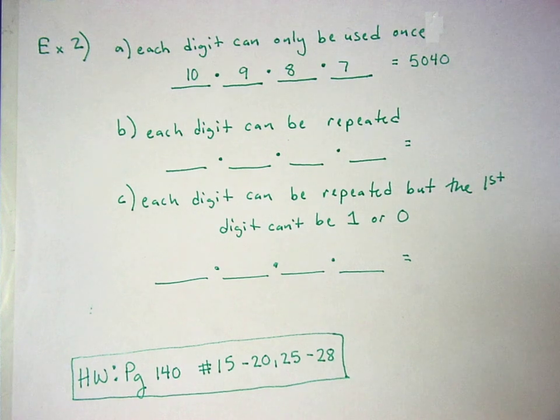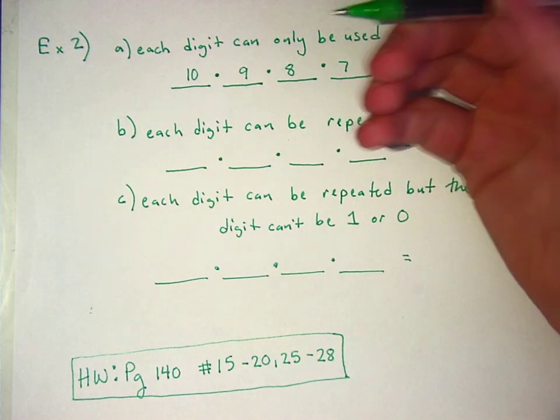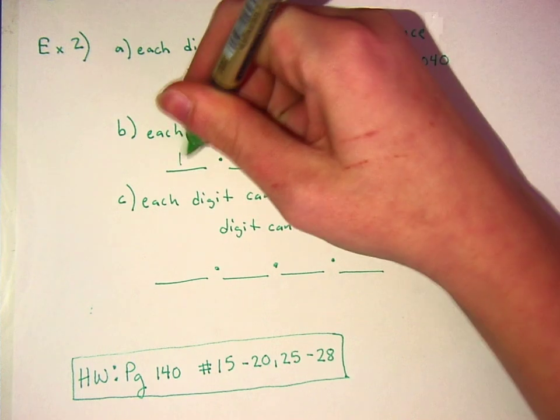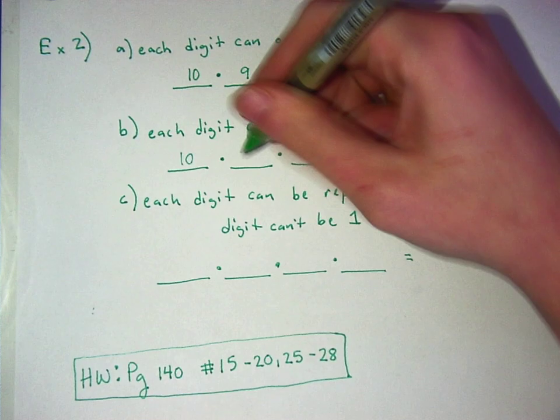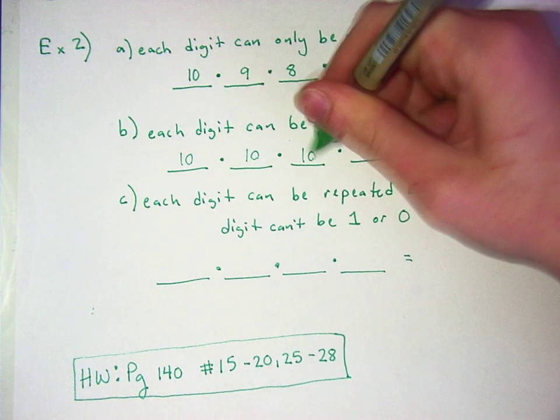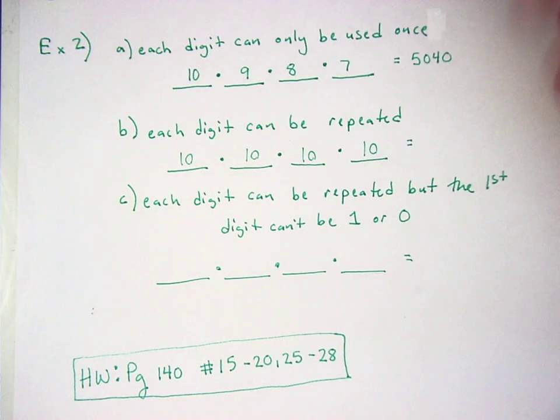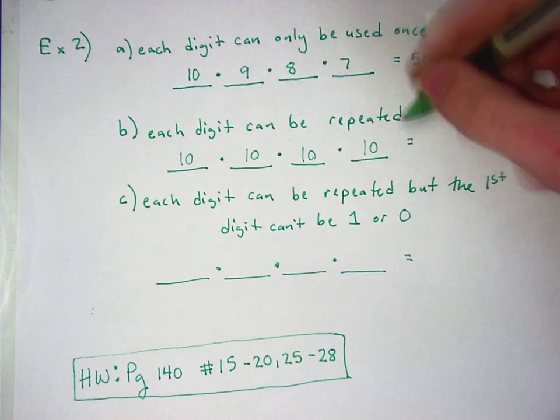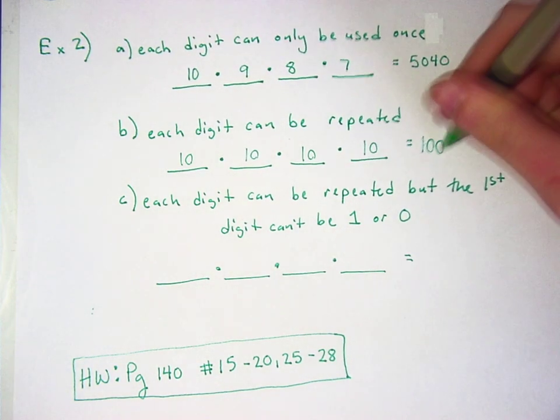So each digit can be repeated. So there's 10 digits. So you can just put each digit. So it'd be 10 digits. So you can put one, one, one, one. You have all 10 options. You have all 10 options to do for each digit. Nice. Good job, Cole.